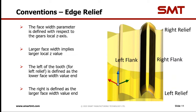Next is edge relief. The face width parameter is defined with respect to the gear's local Z-axis: a lower Z value is the lower end of the face width scale, and increasing Z goes toward the higher end. Edge relief is defined on a tooth basis rather than a flank basis. This means that left relief is on the same end of the tooth for both the left and right flanks, and the same applies to right relief — which may seem counterintuitive but is how it is defined.